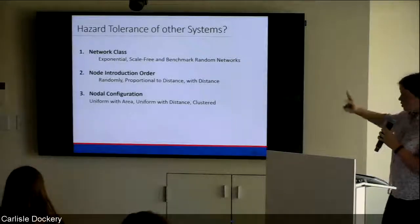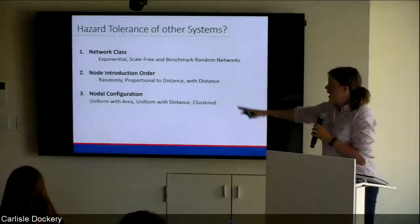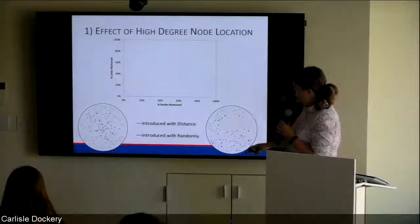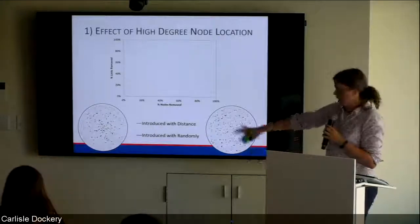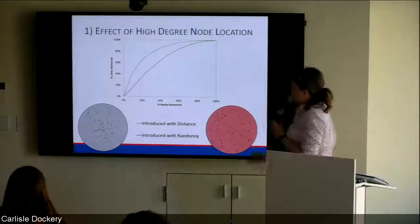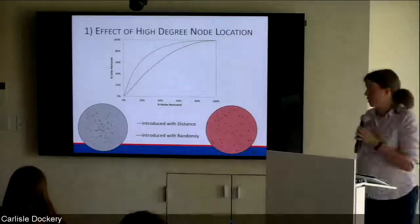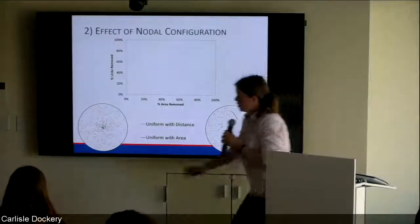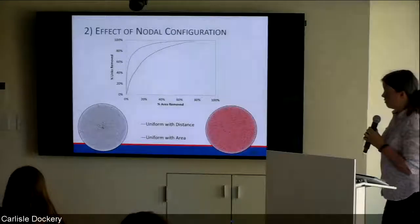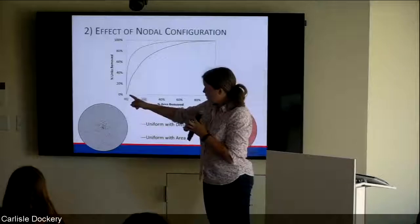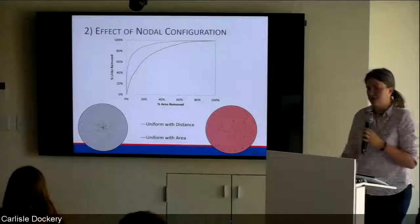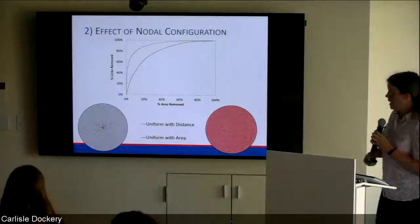We furthered this by looking at other systems - creating different network classes and different node introduction orders. For example, looking at the effect of high-degree node location: a network where high-degree nodes are spread out versus clustered in the middle shows very different vulnerability under the same hazard. With nodes clustered in the center, you've got a much more vulnerable network. You can remove about two percent of that network and get 40 percent of your links removed. So a network whose architecture tells you it's resilient can actually be inherently vulnerable based on its spatial characteristics.